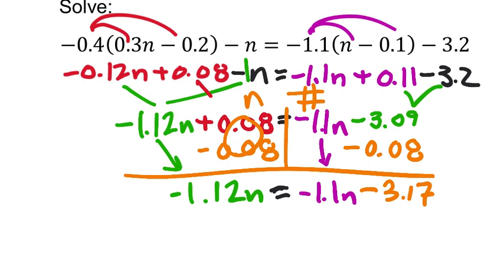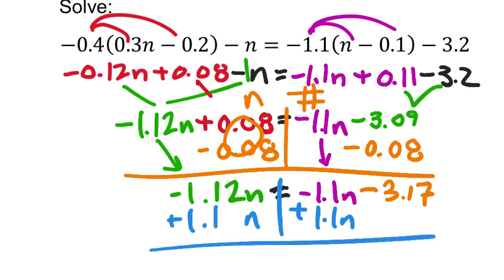So now I got the purple negative 1.1n. We've got to zero that out too, so we'll add 1.1n. But if you do it on one side, you've got to do it on the other side as well. Kind of line up the decimal places there. That's going to zero that out. So what did we get on that one? A negative 0.02n. And then on the right side, we still have that negative 3.17. I'll just drop that over here.